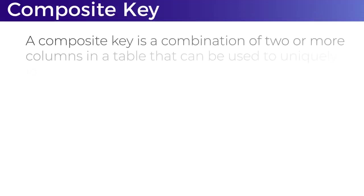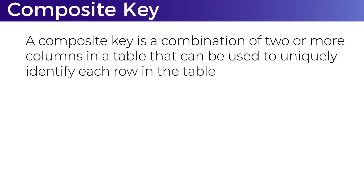A composite key is a primary key that is a unique identifier of a table, but a composite key is when there are more than one columns to identify a particular record of the table. We'll see this in an example.